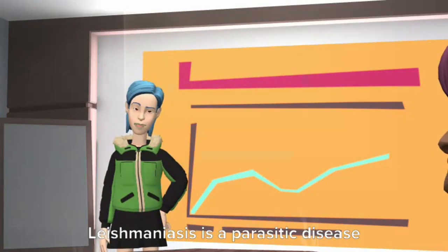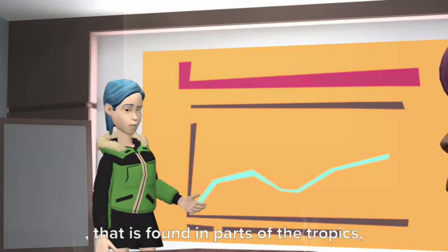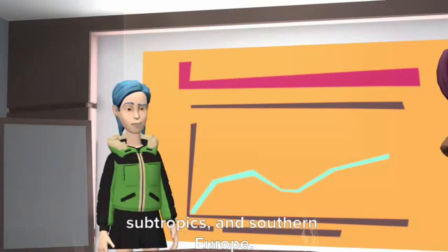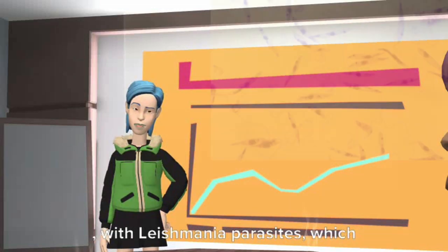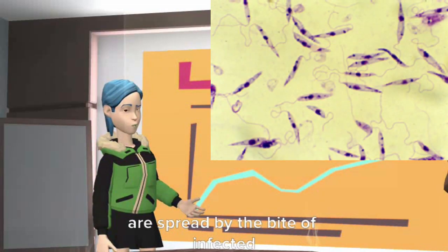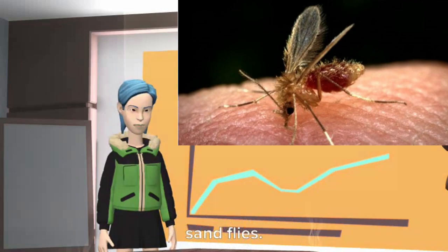Leishmaniasis is a parasitic disease that is found in parts of the tropics, subtropics, and southern Europe. Leishmaniasis is caused by infection with Leishmania parasites, which are spread by the bite of infected sand flies.